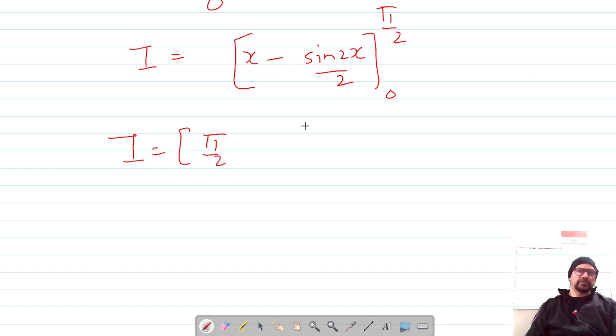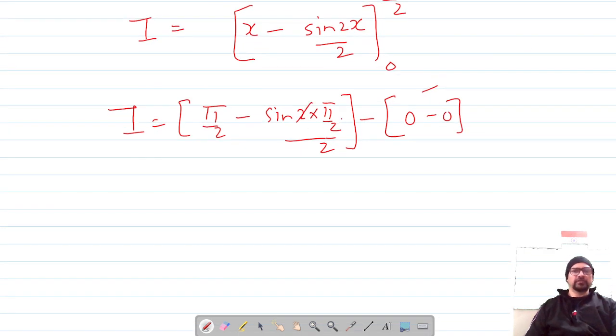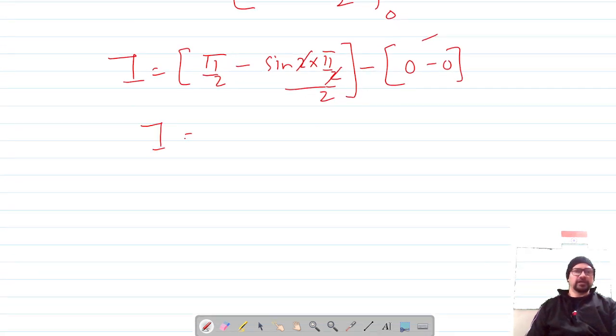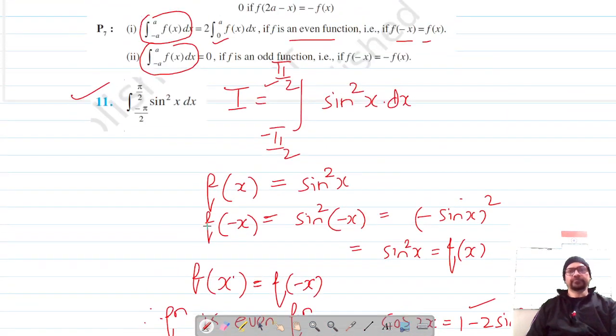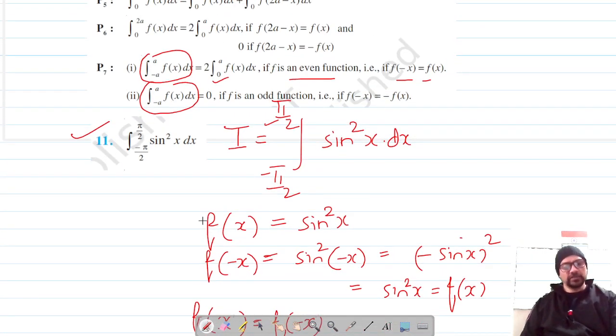Evaluating at π/2: π/2 - sin(π)/2. At x = 0, we get 0 - 0. Since sin π = 0, the result is I = π/2. So our answer is π/2 for question number 11. Do like, share, and subscribe.